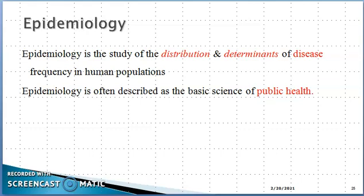Basically, epidemiology is the study of the distribution and determinants of disease frequency in human populations. Epidemiology is the basic science which looks at what is the distribution of any disease — distribution means which geographic area, which place, which area is the disease spread, from an international level, or in a particular city, continent, or region.